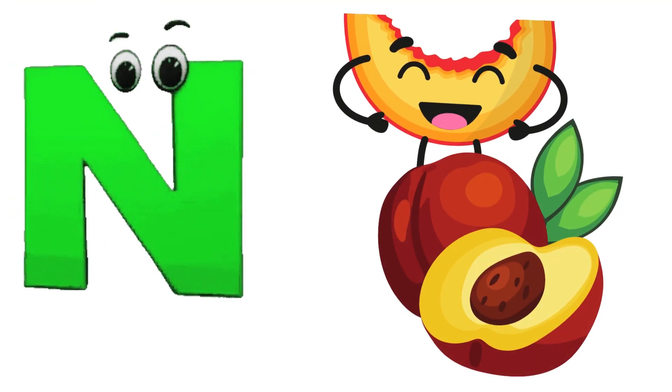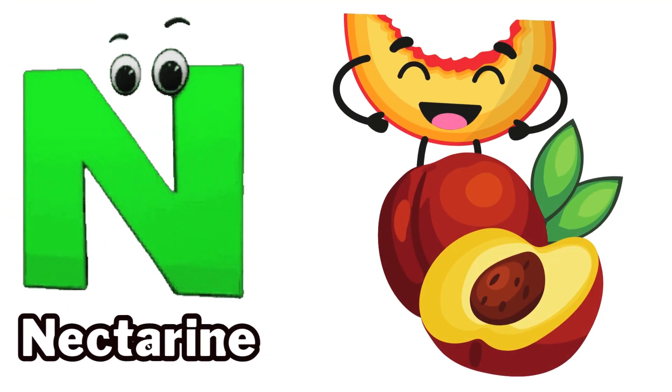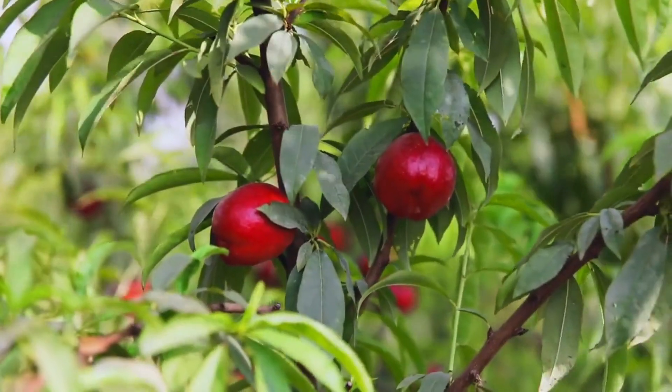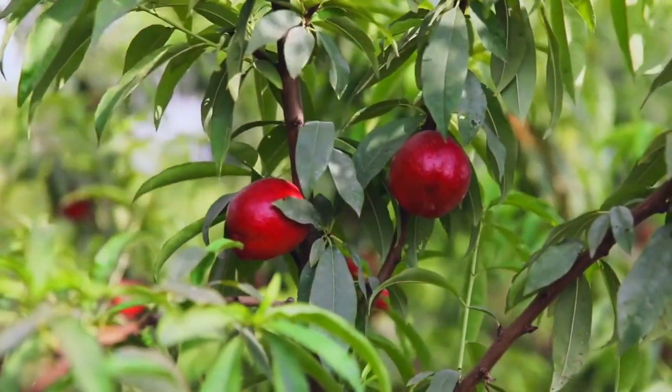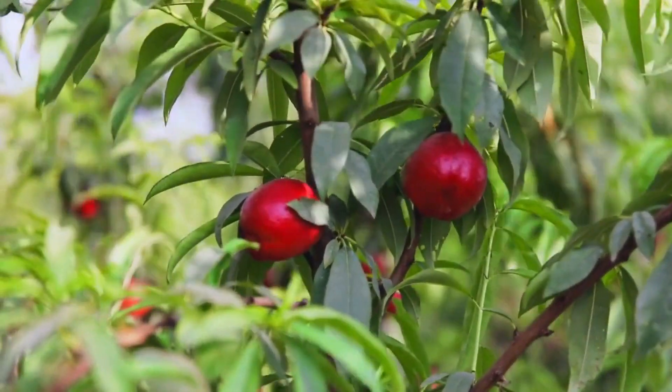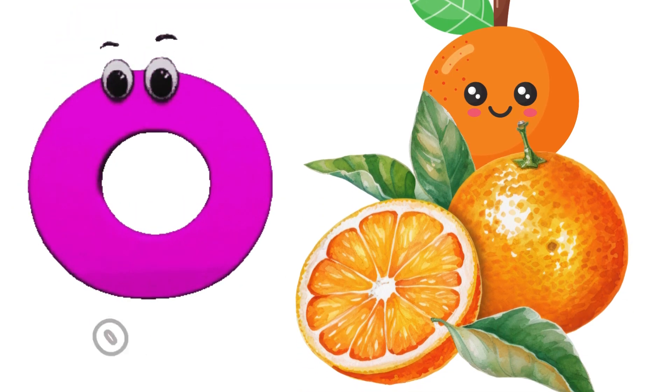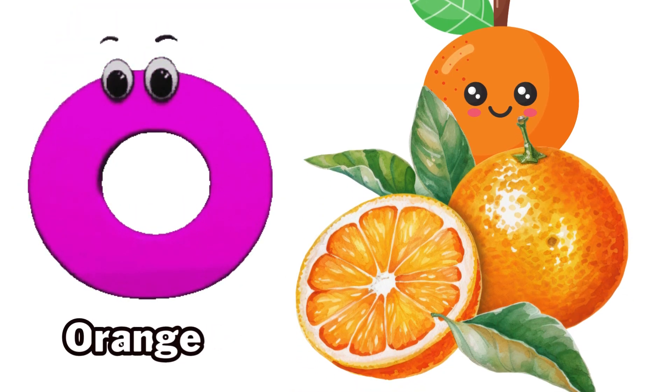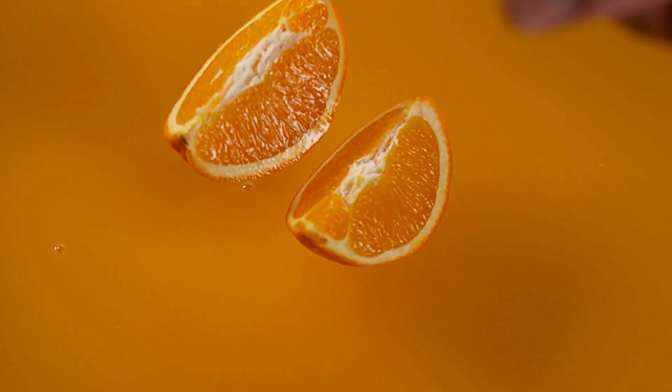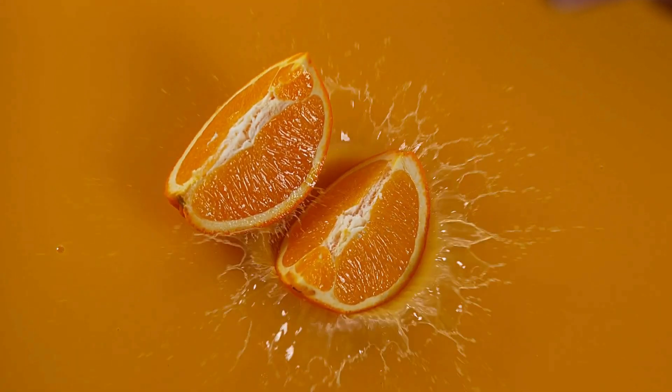N is for nectarine, na-na-nectarine. O is for orange, o-o-orange.